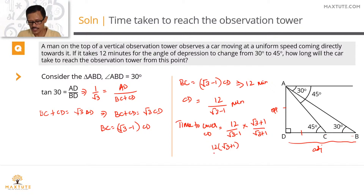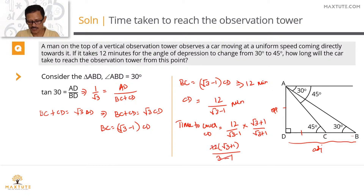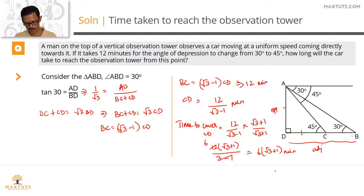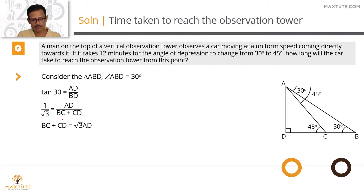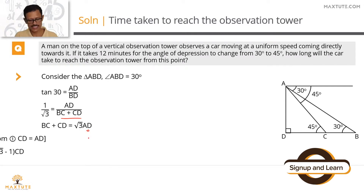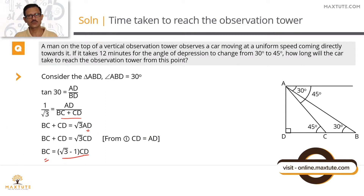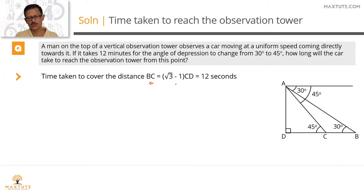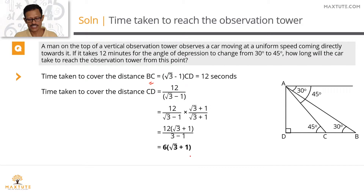The numerator becomes 12 times (root 3 plus 1). The denominator is of the form (x minus y)(x plus y) = x² minus y², giving root 3 squared minus 1 squared = 3 minus 1 = 2. The 2 cancels with 12 to leave 6. So the time taken equals 6(root 3 plus 1) minutes. That's the time to travel from point C to the tower. Alternative 1 is done.